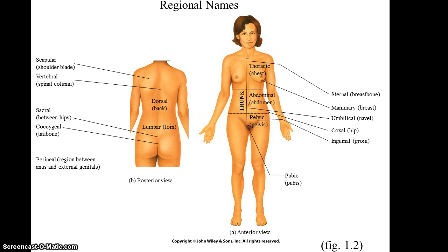The mammary region for the breasts, the umbilical region for the navel, the coxal region for the hip, the inguinal region for the groin, and the pubic region.